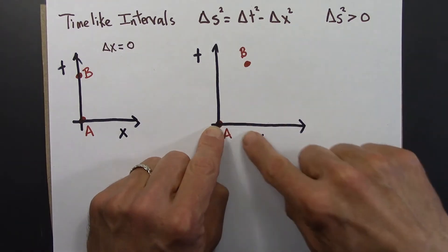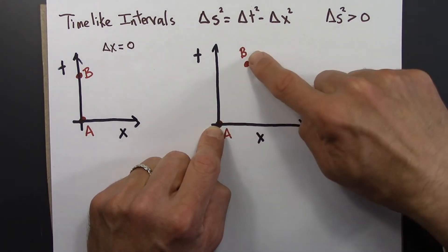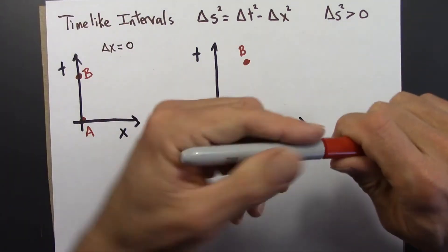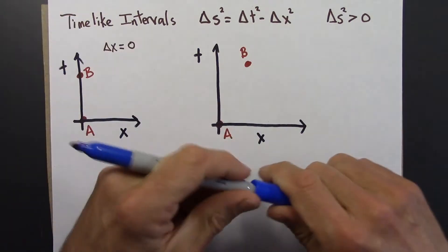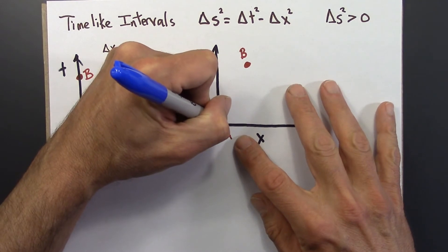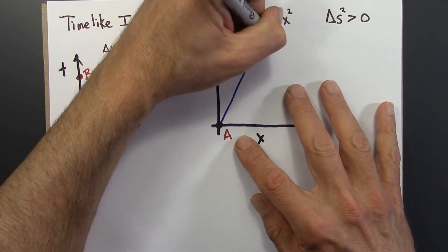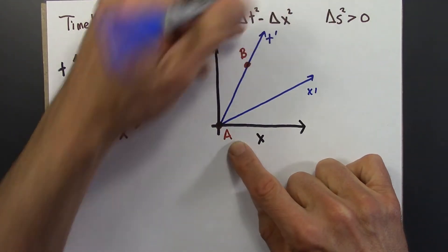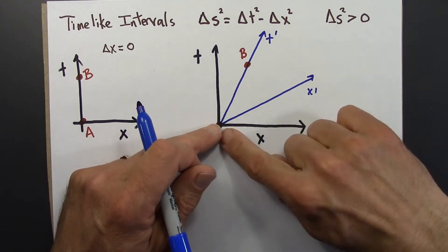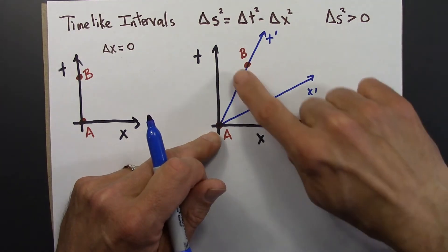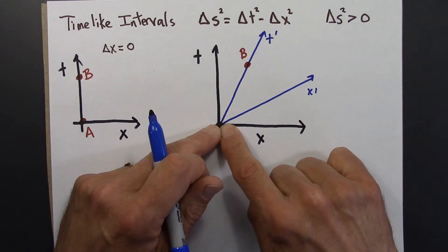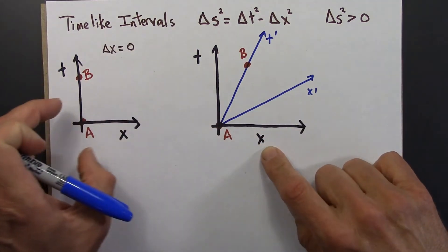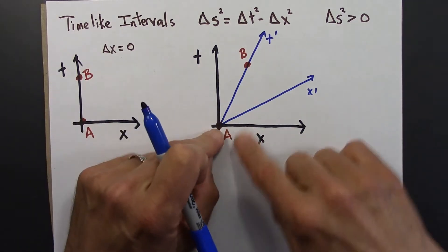But in this case, it's not like a purely time type of deal, because there is a delta x. Delta x is not zero. But someone else may have a different point of view. There could be a reference frame moving with respect to this one, such that the t prime axis happens to go right through B. There's some reference frame that would look like this. In this reference frame, A and B are purely time separated. In the primed reference frame, the blue reference frame, delta x prime is zero and delta t prime is whatever it is.